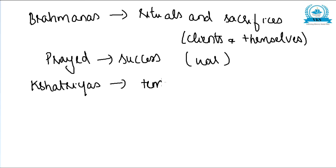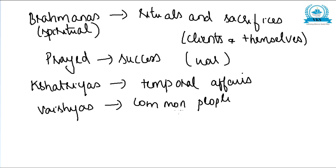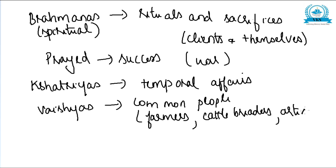The Vaishyas constituted the common people and were assigned to do agriculture, cattle breeding, and similar work. Some of them were also artisans. Towards the end of the Vedic period they also began to engage in trade. The Vaishyas appear to be the only tribute payers in the Vedic times, and the Kshatriyas are represented as living on the tribute collected from the Vaishyas.